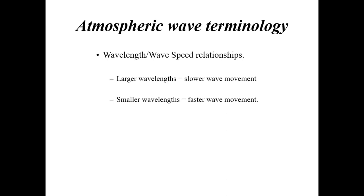To summarize the wavelength-wave speed relationship: larger wavelength waves — think long waves at the jet stream level at 30,000 to 40,000 feet — generally move slower. Smaller wavelength waves — those short waves in the middle levels of the atmosphere — move much quicker and faster.